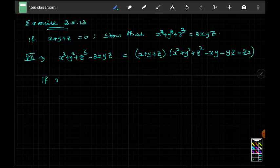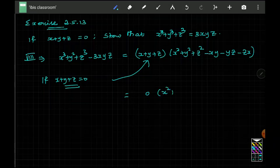If x plus y plus z is 0 in this, we have to substitute 0 over here. If you substitute 0 over here, 0 into this whole thing x square plus y square plus z square minus xy minus yz minus zx.